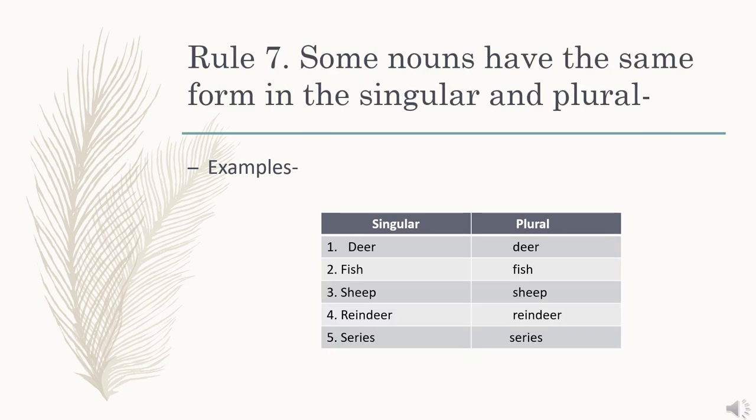Rule number 7: some nouns have the same form in the singular and plural. That means some nouns do not change in their singular or plural form — they remain the same in both. For example: deer, fish, sheep, reindeer, series.